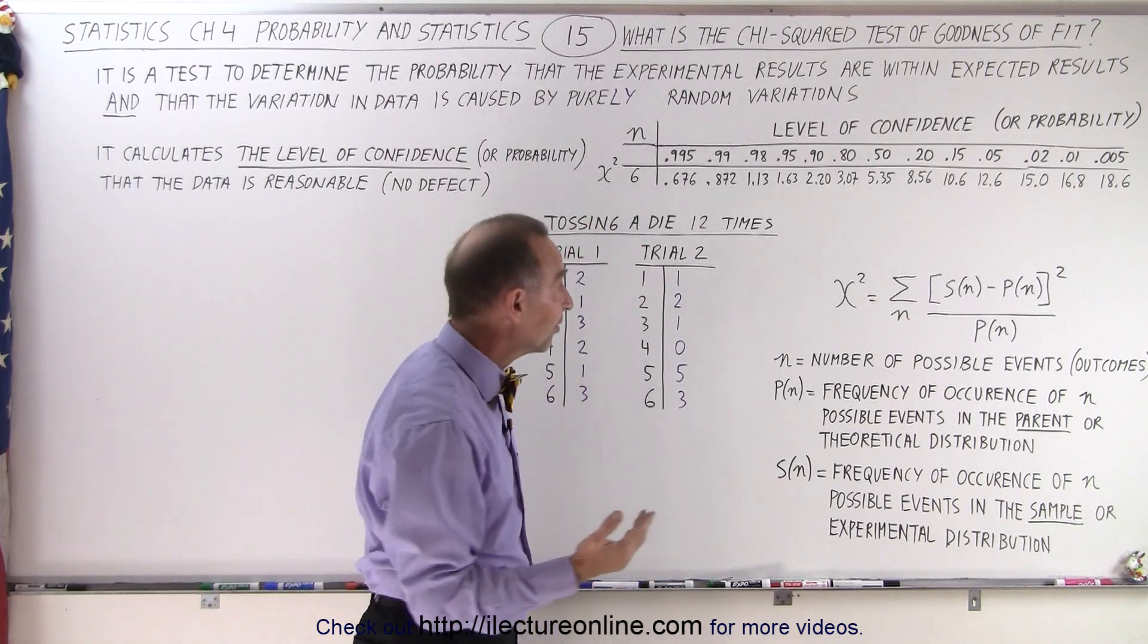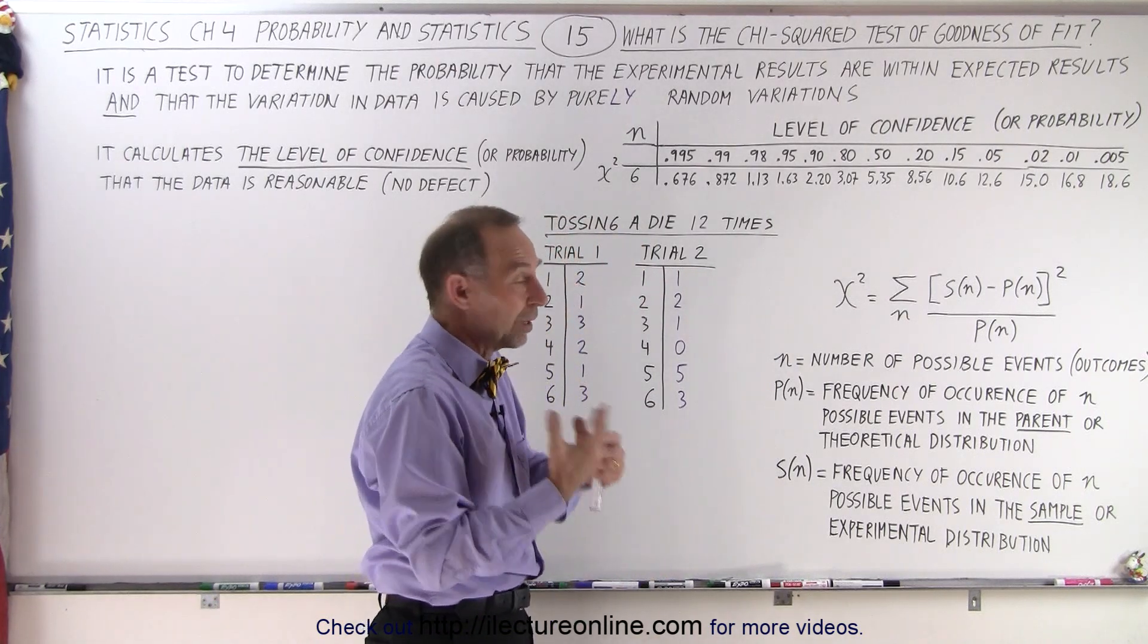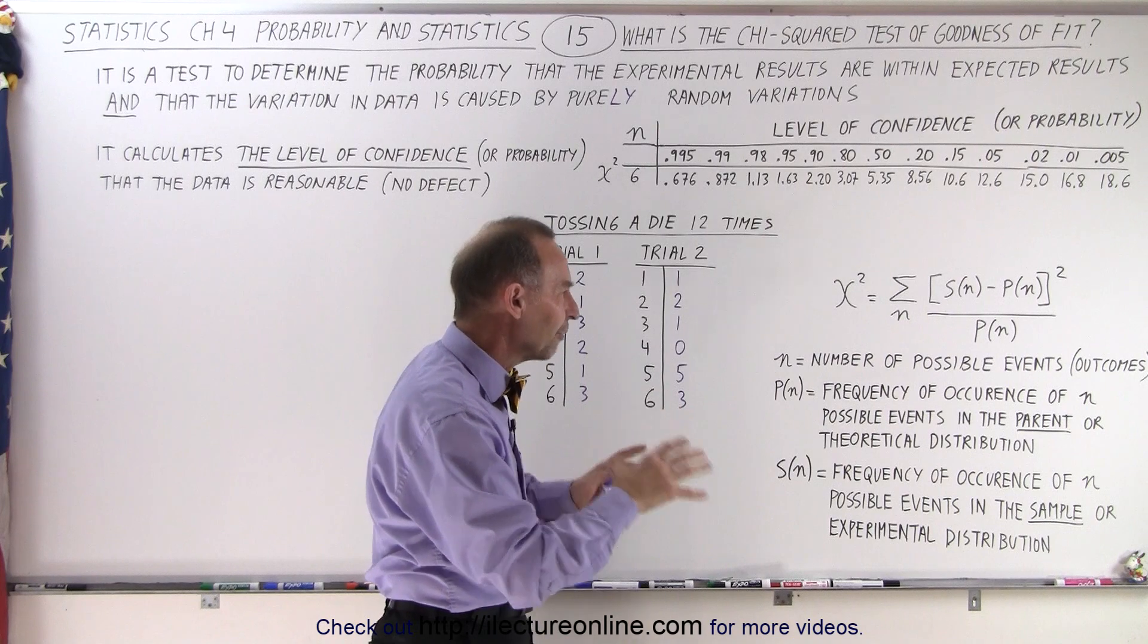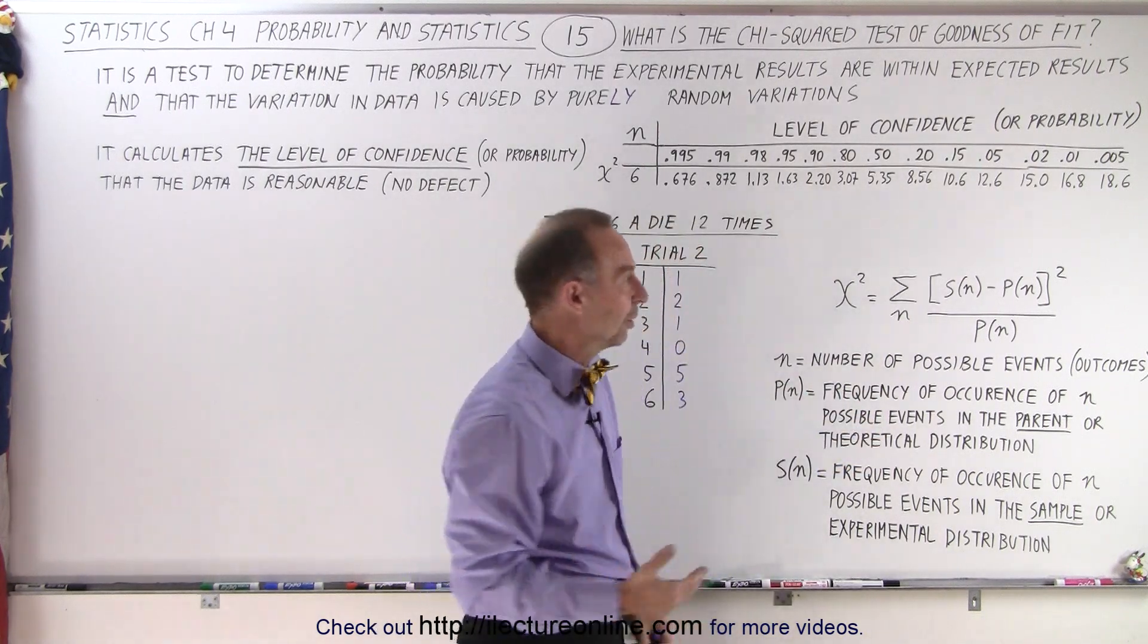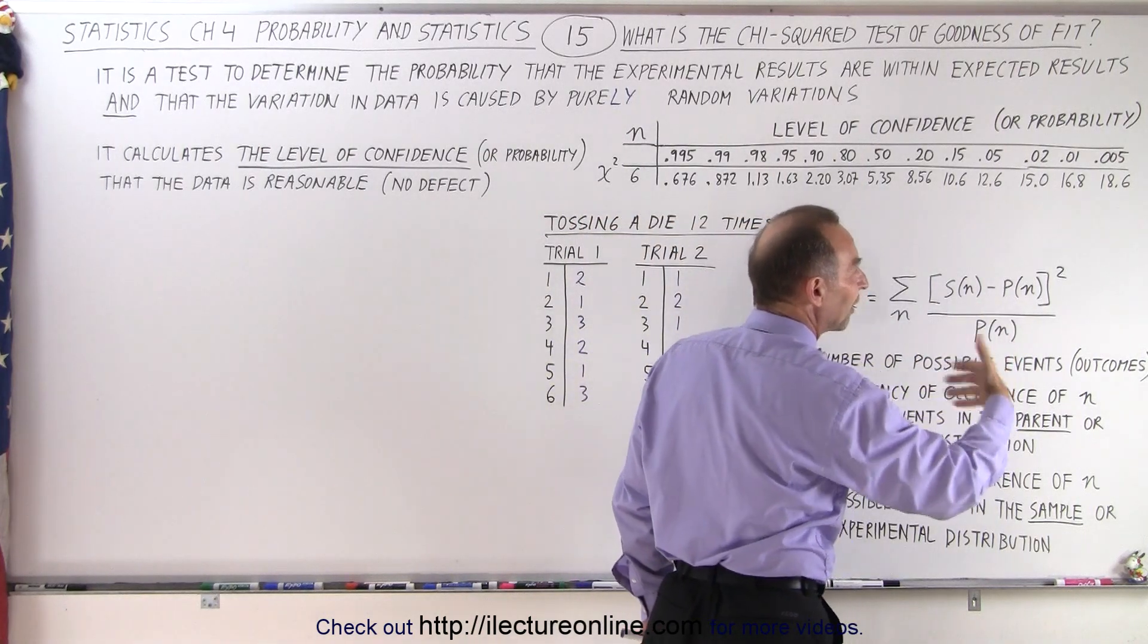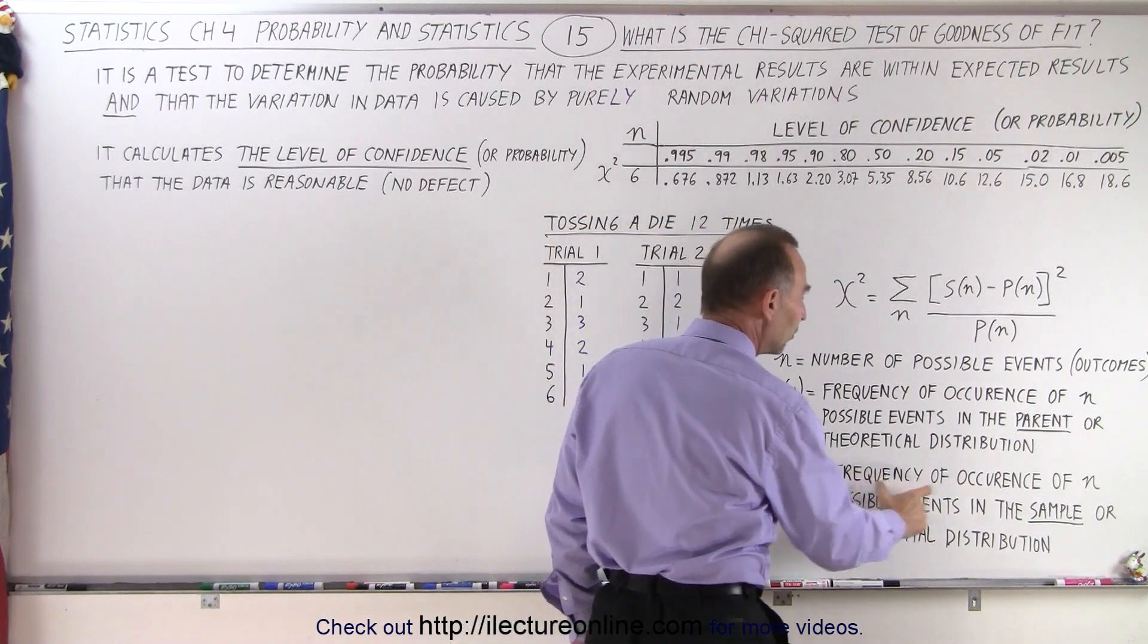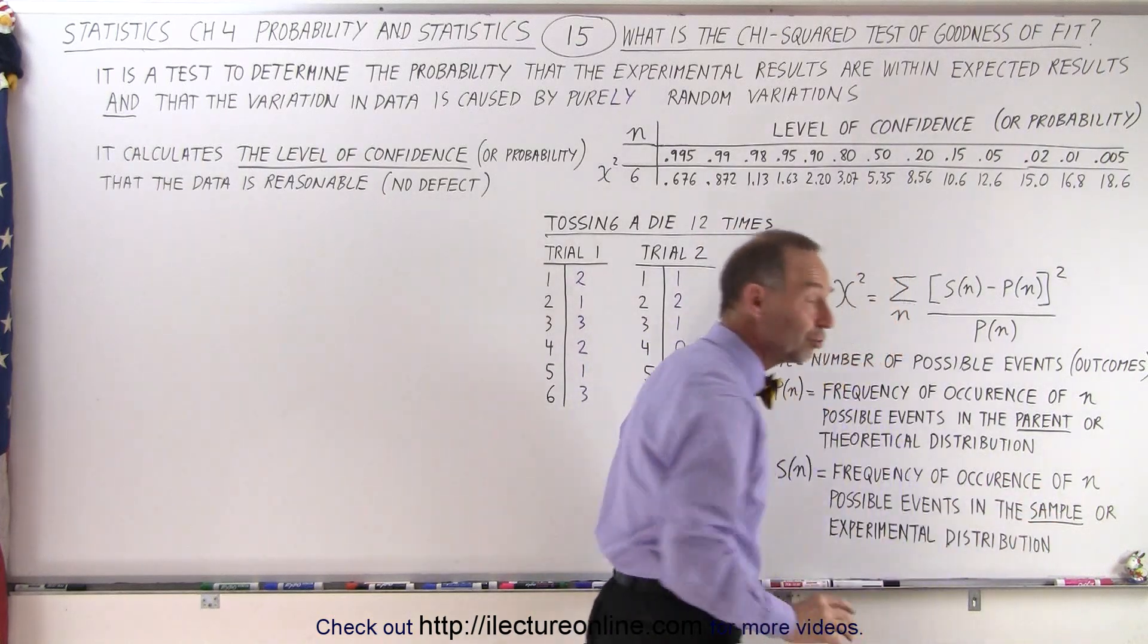P(N) is the frequency of occurrence of N possible events. So in the case of tossing a single die, N would be 6, in the parent or theoretical distribution. So the frequency, let's say, if we toss a die 6 times, we would expect 1 out of 6 to be a 6. So that's what we call the frequency of occurrence of the parent or theoretical distribution. That's what we would expect. So this is the probability of occurrence of the event that you're looking for, the expectation, the theoretical values.